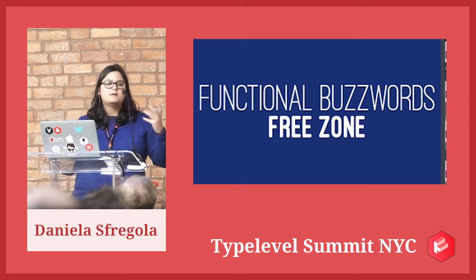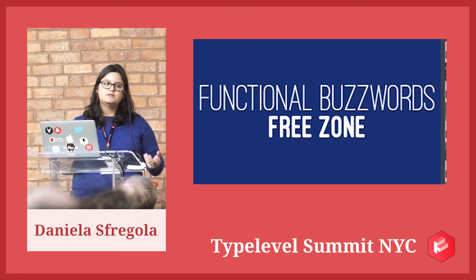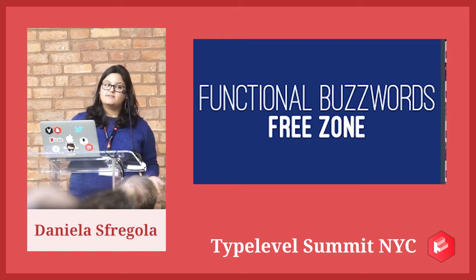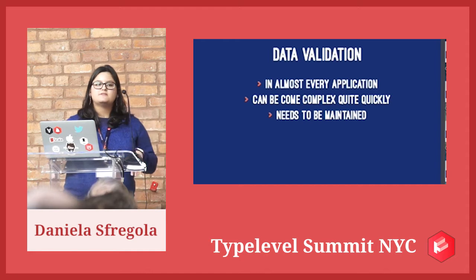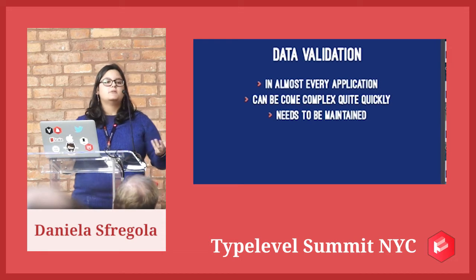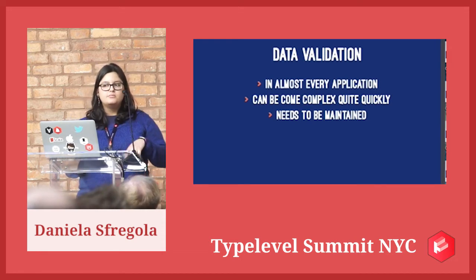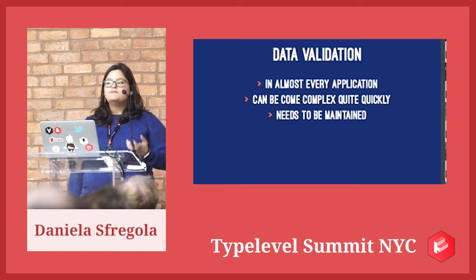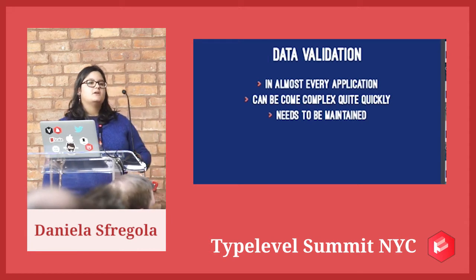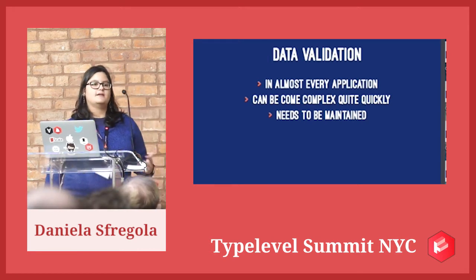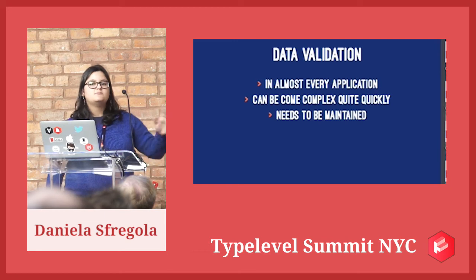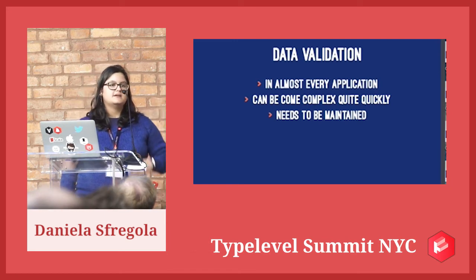You have two types of validations. You have what I call technical validation - like is this an int? Is this a double? Is this a valid email? And then you have business validation, which changes a lot and can get really complex. It needs to be maintained. If we don't structure it properly, it can be a real mess. So why every time do we try to reinvent the wheel? Wouldn't it be better to use something that someone else already spent their time on, that has probably been tested and just works?